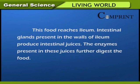Pancreatic juice is secreted from the pancreas. The enzymes present in these juices change most of the food into simple form. This food reaches the ileum. Intestinal glands present in the walls of the ileum produce intestinal juices. The enzymes present in these juices further digest the food.